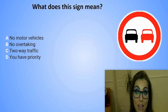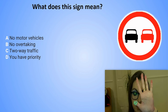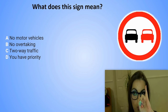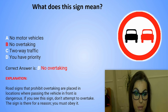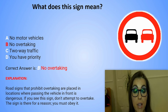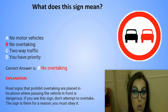What does this sign mean? A. No motor vehicles. B. No overtaking. C. Two-way traffic. Or D. You have priority. The correct answer is B. No overtaking. Explanation: Road signs that prohibit overtaking are placed in locations where passing the vehicle in front is dangerous. If you see this sign, do not attempt to overtake. The sign is there for a reason. You must obey it.